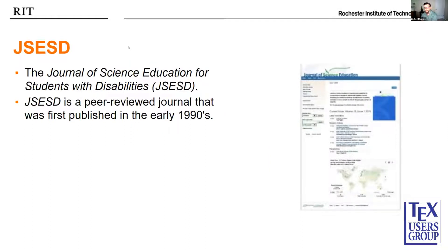The journal we're going to talk about today is the one I am co-editor of: the Journal of Science Education for Students with Disabilities — JSESD. JSESD provides a venue for the dissemination of information on science education for students with varying types of disabilities. It is a scholarly publication of the National Science Teachers Association's special interest group, Science Education for Students with Disabilities, or SESD. JSESD was previously produced in a print version, and we're going to talk about that change.